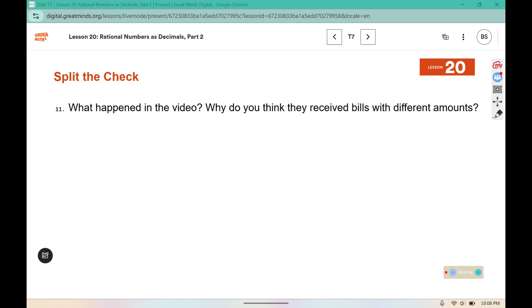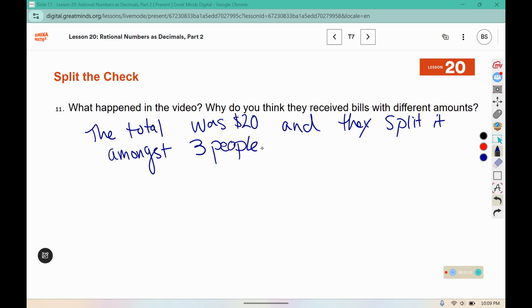So, what happened in the video? Why do you think they received bills with different amounts? In the video, the total was $20, and they had to split it amongst three people. Let's look at why they received different bills. 20 divided by 3. 3 does not fit into 2, but it does fit into 20 six times. And it fits into 20 six times, and that's going to continue on.